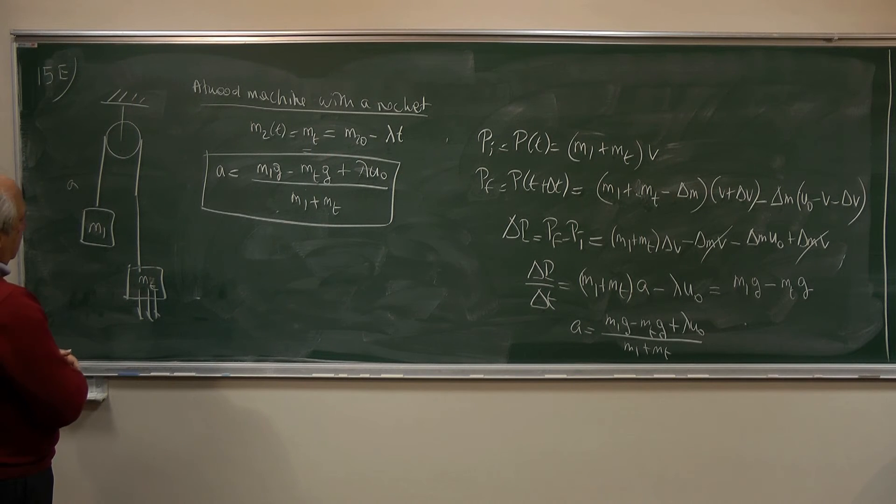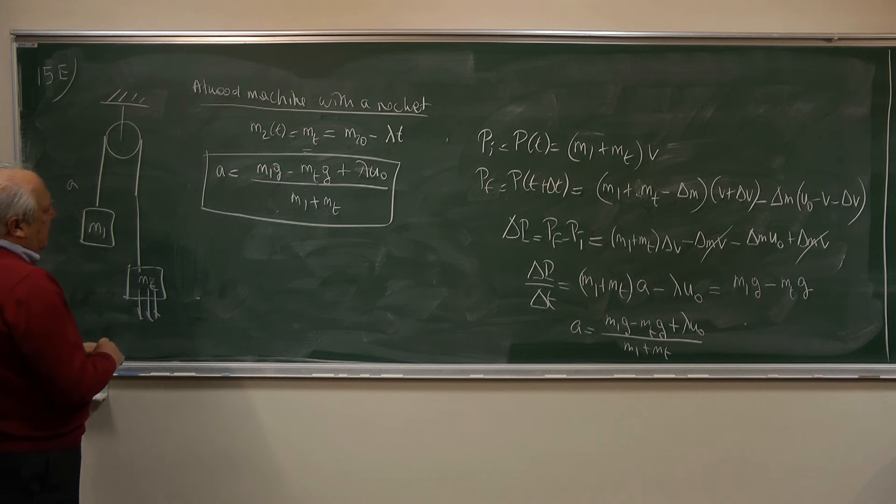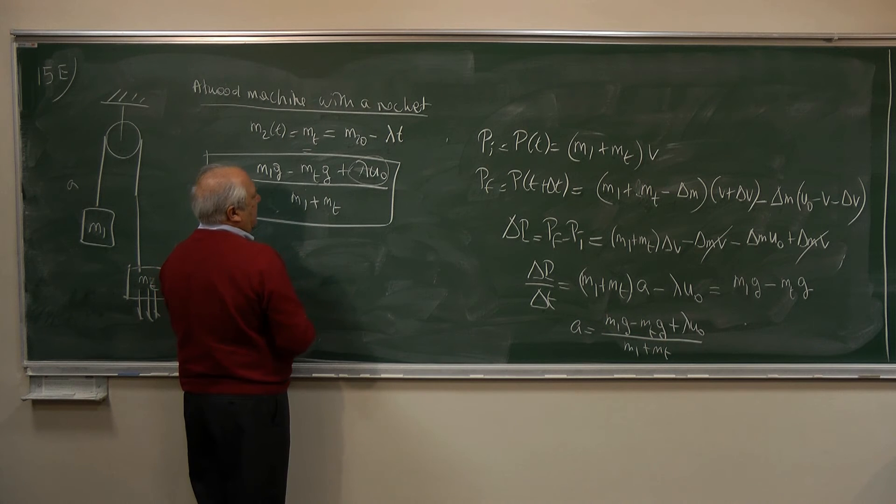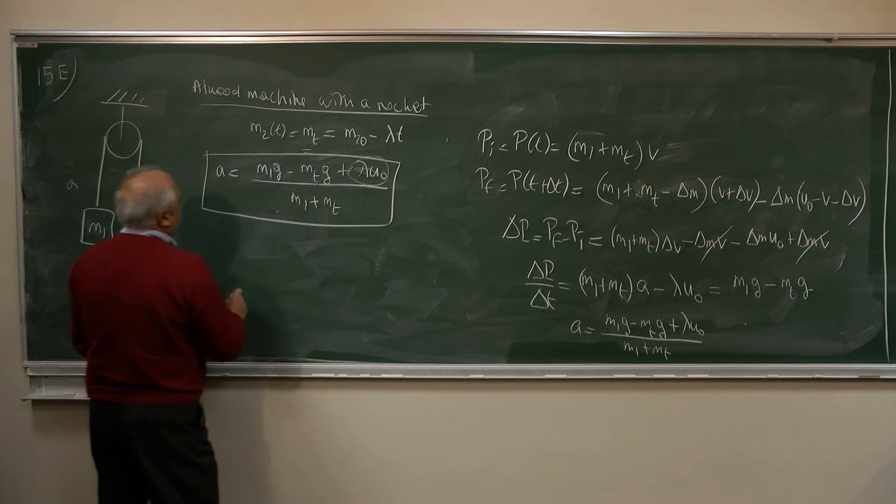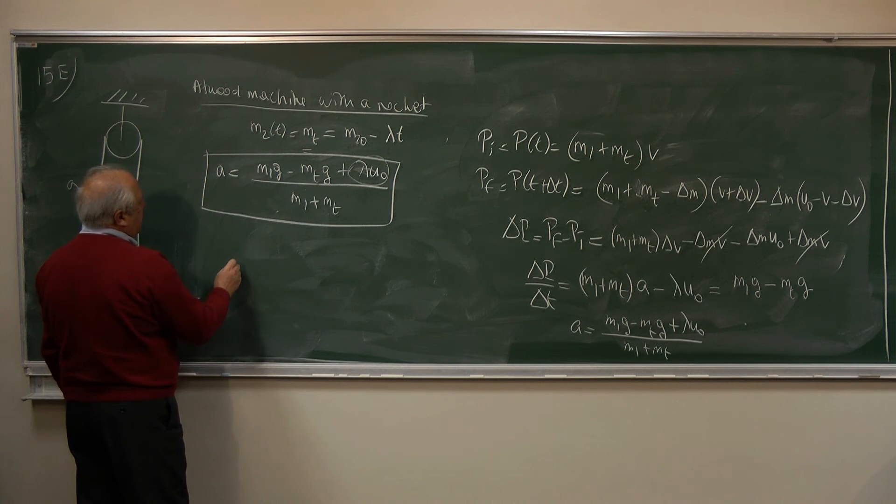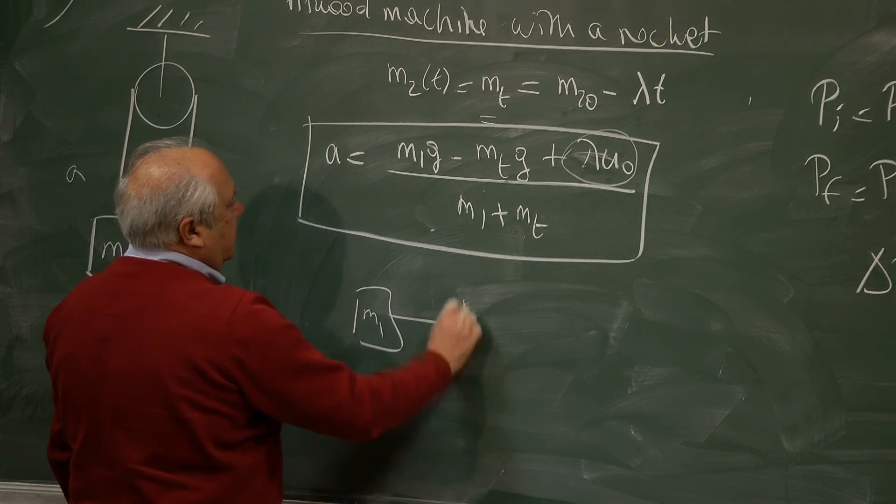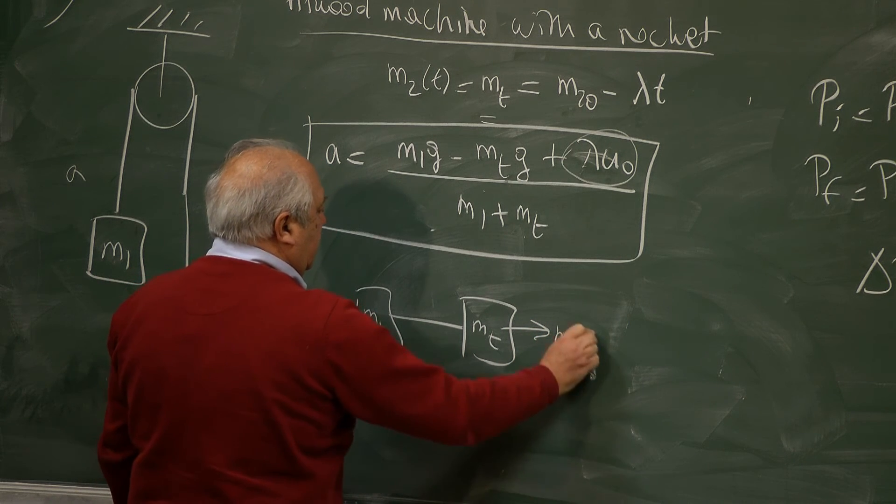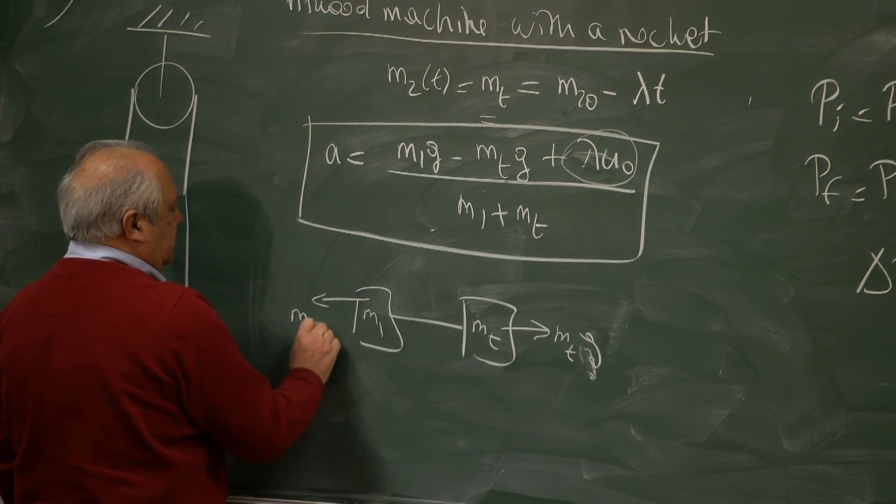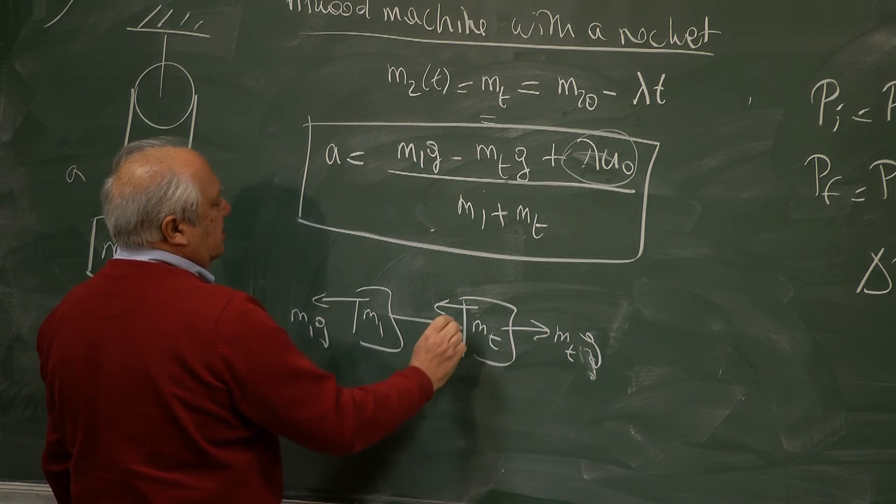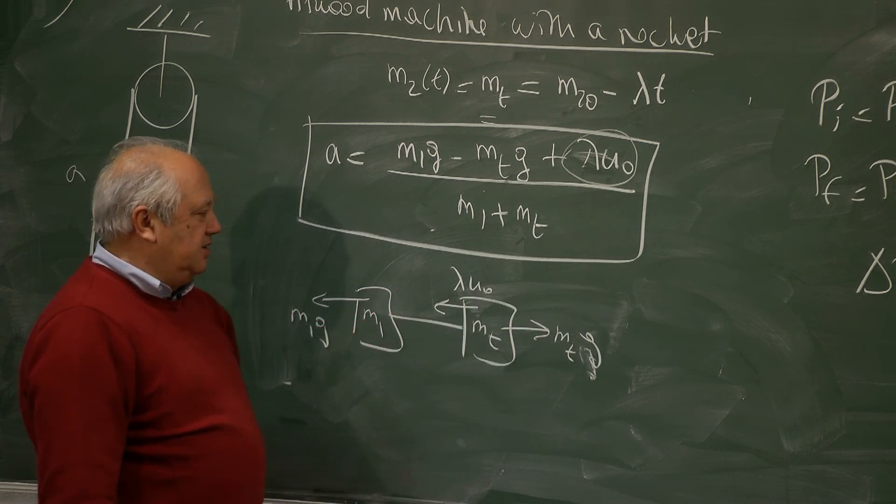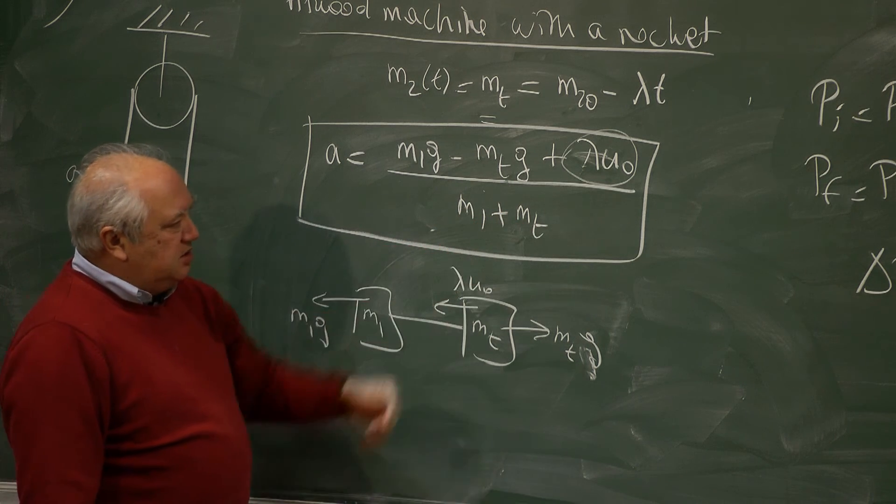We can notice something here. It is as if here is a force of thrust applied. So if you want to write a quick way to solve this problem, you can say this is M1, this is MT, this is MTg, and this is M1g. And in addition, you have a thrust here, lambda U zero. So it's the net force divided by the total mass that is moving. Of course, as time goes on, MT is changing.